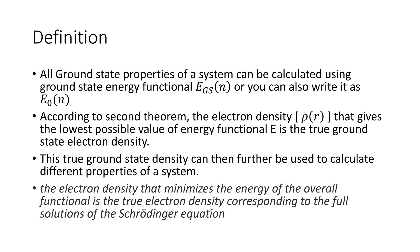We use the variational theorem. We apply different values of the electron density, and finally, for one of these electron densities, the energy functional will have the minimum value. That electron density will be the true ground state electron density, which can then be used to calculate different properties of a system.